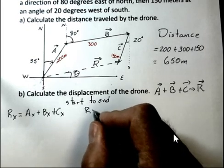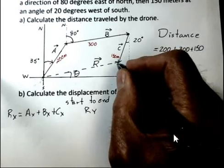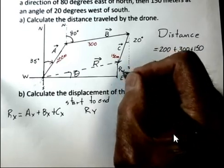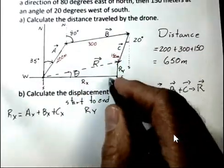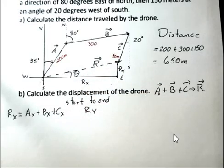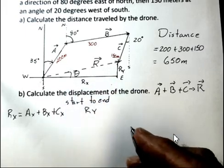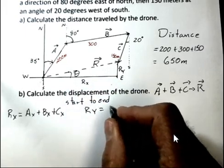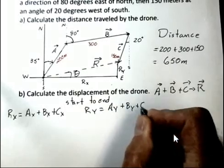And similarly, I want to get the y component. And having those components, the Ry will be here and the Rx will be here. That'll form legs of a right triangle. And we'll use analysis of a right triangle to come up with the length of R and the angle for R. But continuing here, R sub y is A sub y plus B sub y plus C sub y.